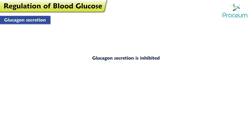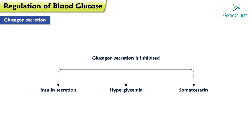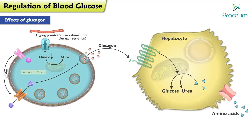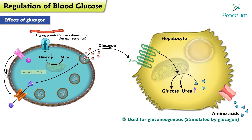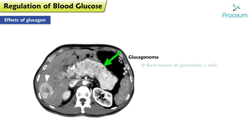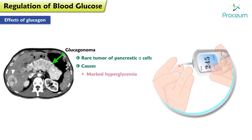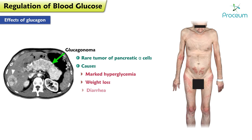Glucagon secretion is inhibited by insulin secretion, hyperglycemia, and somatostatin. Here are the effects of glucagon. Glucagon increases urea production because amino acids are used for gluconeogenesis, which is stimulated by glucagon, and the resulting amino groups are incorporated into urea. Glucagonoma is a rare tumor of pancreatic alpha cells that causes marked hyperglycemia, weight loss, diarrhea, and red blistering rash.